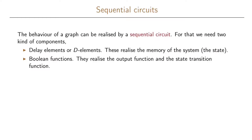Sequential circuits are used to realize the behavior of a graph. In order to realize this behavior we need two kinds of components. The first component is a delay element, also called a d-element. We use the graph to realize the memory of the system, and these delay elements will be used to realize the memory when making the circuits. So these will give us the state of our graph.